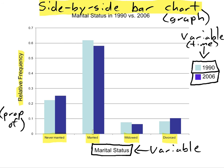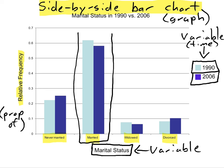How did the proportion of people who were married change from 1990 to 2006? Looking at the bars, it looks like it decreased by a little bit. It's more accurate to say that a smaller proportion of people were married in 2006 than in 1990, because that's what we're looking at — the relative frequencies.